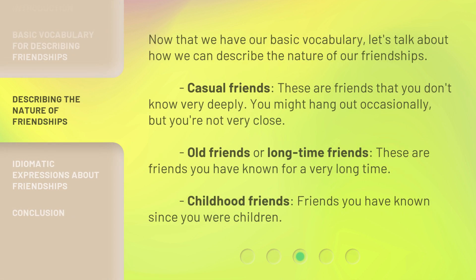Now that we have our basic vocabulary, let's talk about how we can describe the nature of our friendships. 'Casual friends' are friends that you don't know very deeply — you might hang out occasionally, but you're not very close. 'Old friends' are long-time friends you have known for a very long time. 'Childhood friends' are friends you have known since you were children.